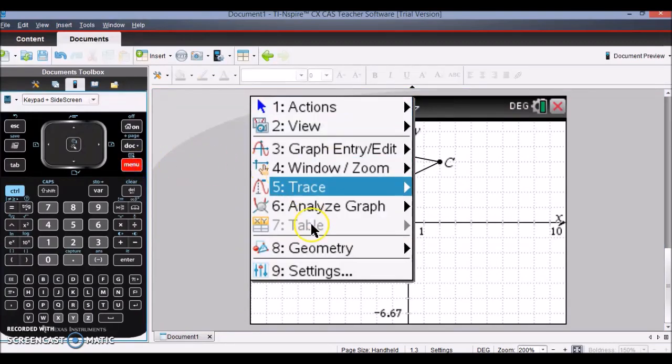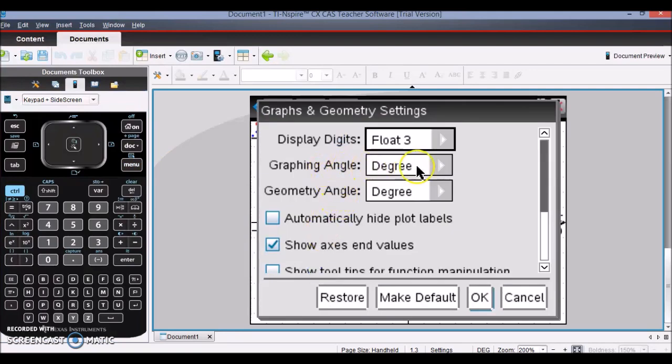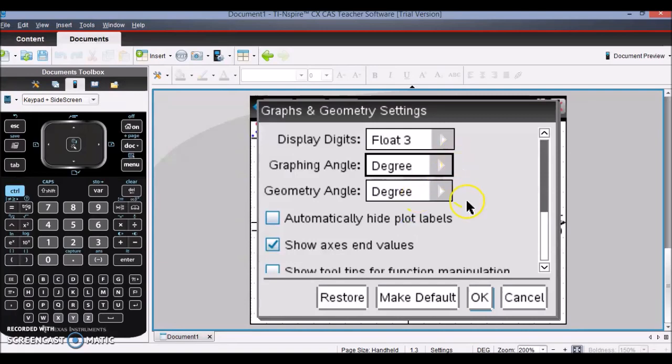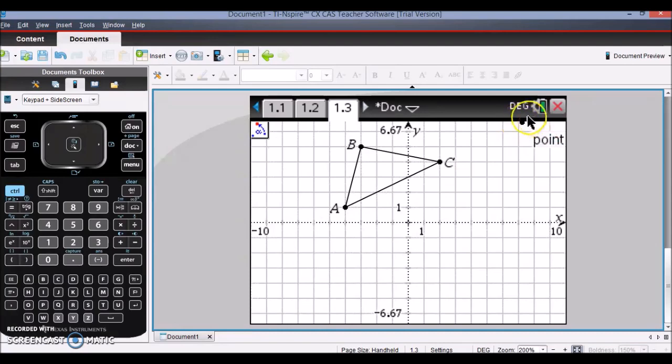If you go to Menu, Settings, you want to make sure your graphing angle is in degree mode and not in radian mode. And if you need to, you can make that default or then hit OK. And notice it will tell you in the top right hand corner that you are in degree mode.